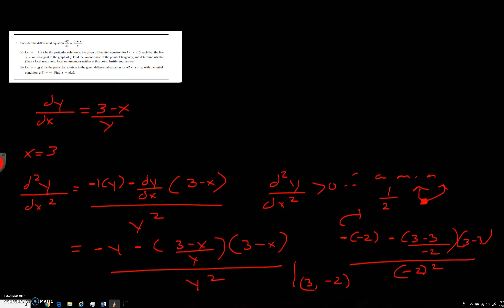Now the next part says, let y equal g of x be the particular solution to the given differential equation from negative 2 to 8, and x is in between there, with the initial condition g of 6 is equal to negative 4, and y equals g of x. So what is it asking us to do here? We're going to have to separate the variables.